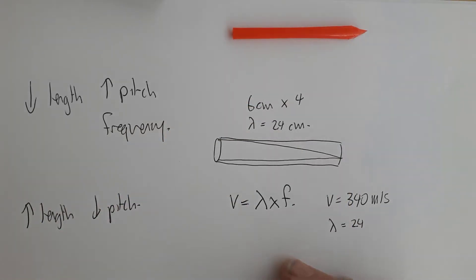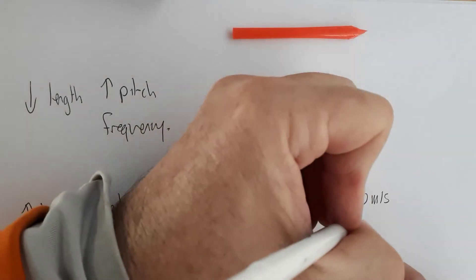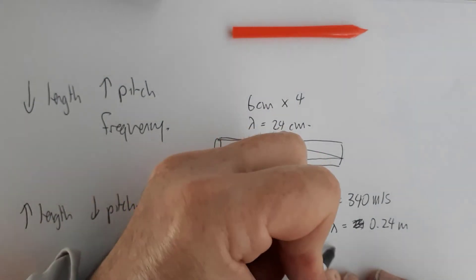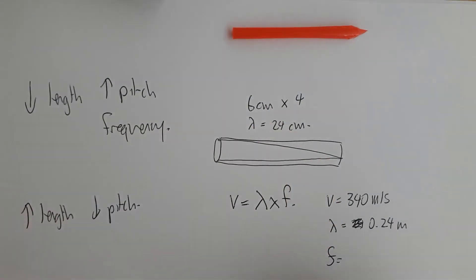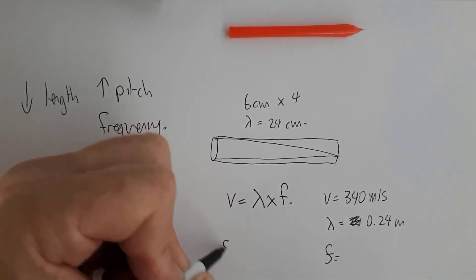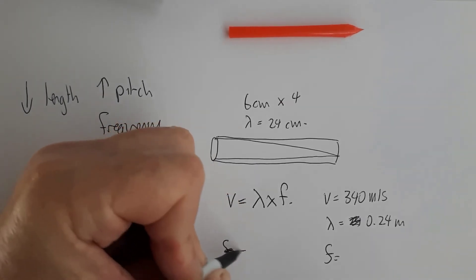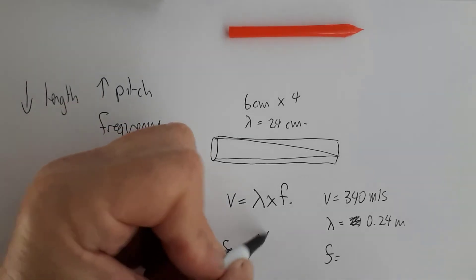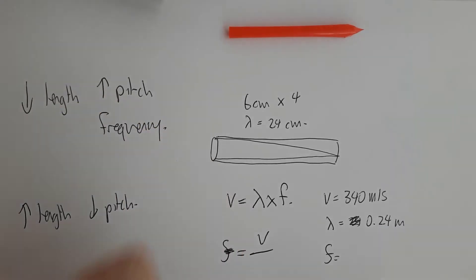Now, 24 centimeters, we don't normally use centimeters. We're going to have to convert that to meters. So 24 centimeters is 0.24 meters. What is our wavelength? So we need to rearrange our equation so we have frequency by itself on the left-hand side. So that's frequency equals the speed of sound divided by the wavelength. So we've got 340 divided by 0.24.